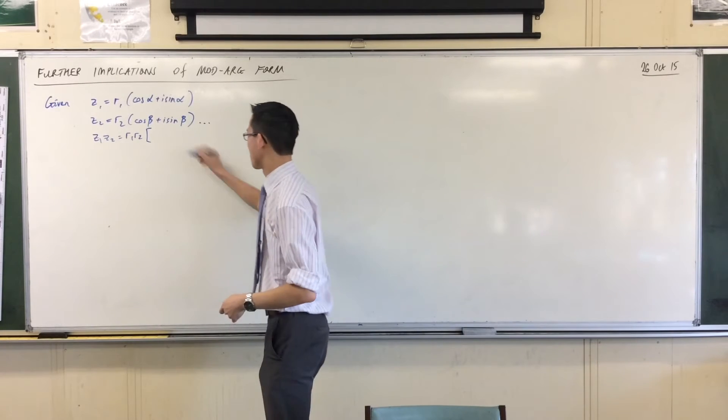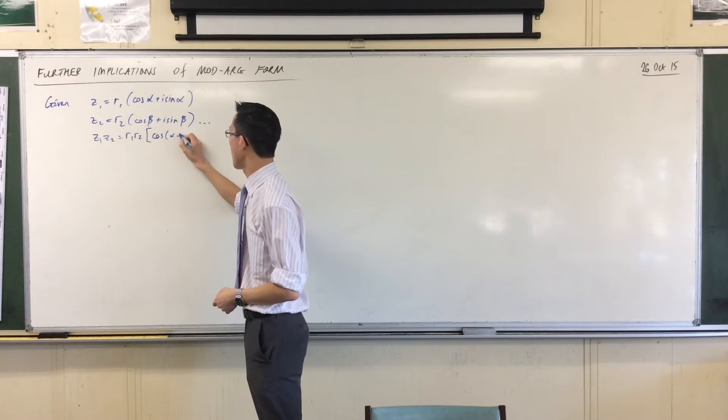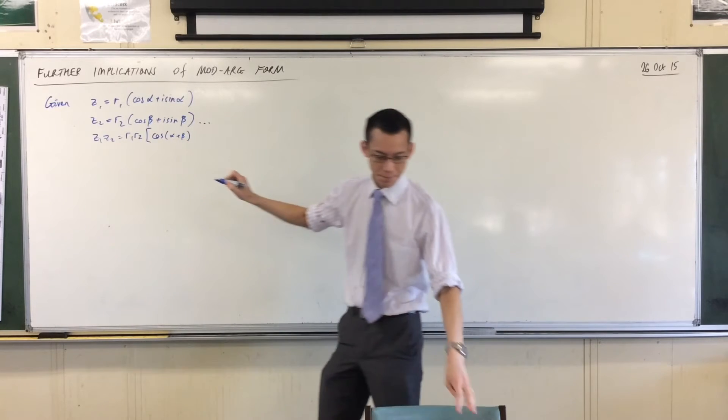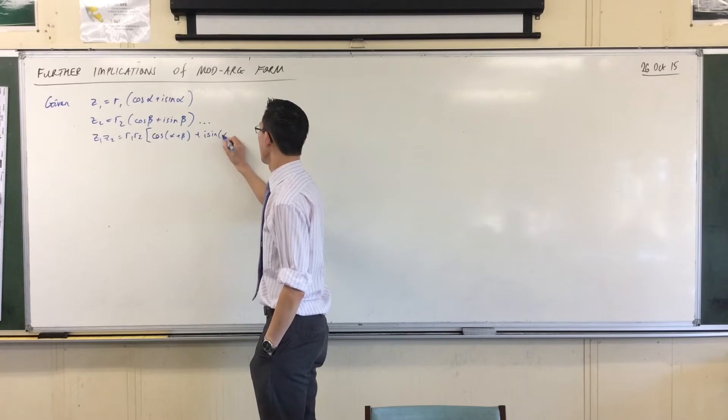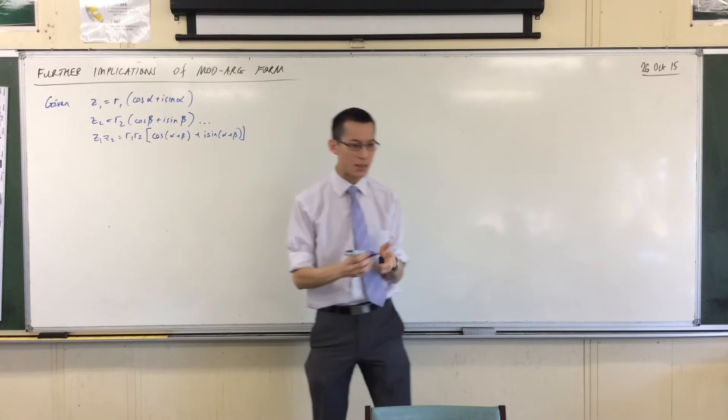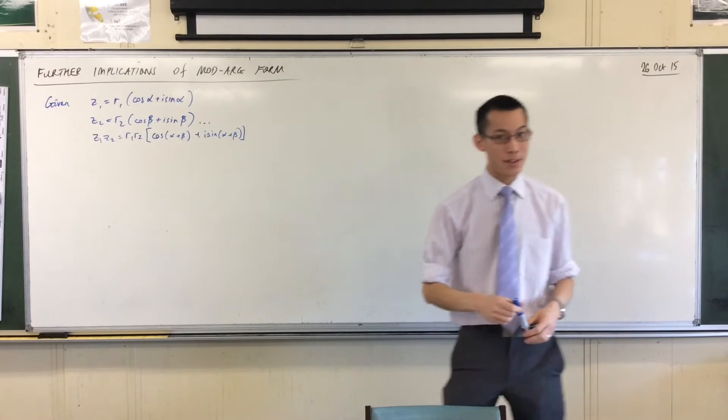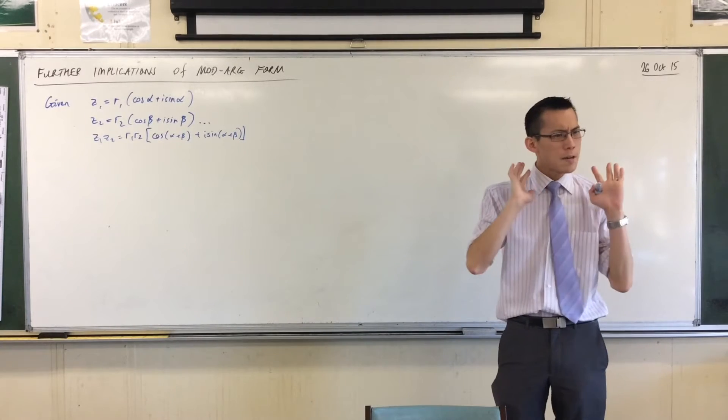What do we do with the argument, with the angles? We multiply mods, we add args. So I get cos(alpha + beta) here and then you've got your plus i*sin(alpha + beta) here. So we multiply mods, we add args.